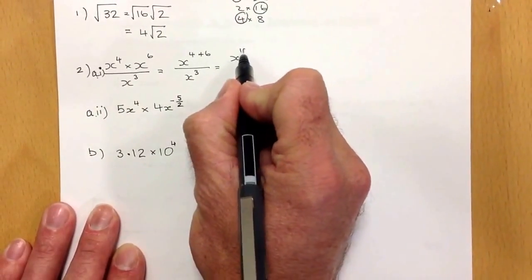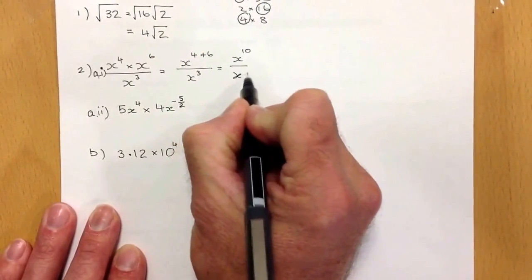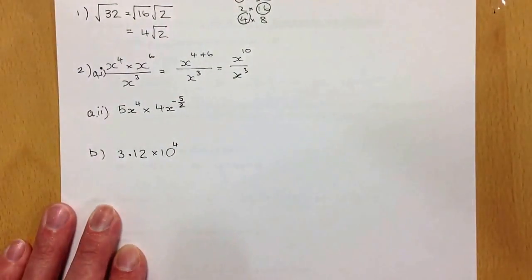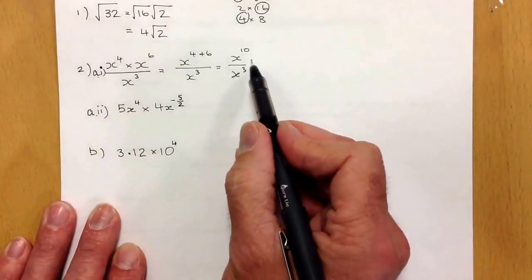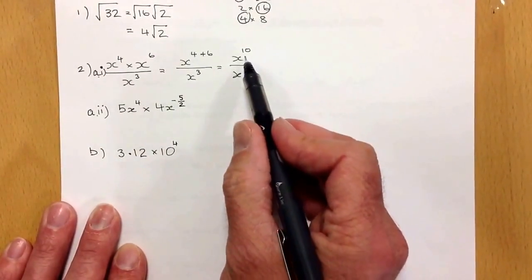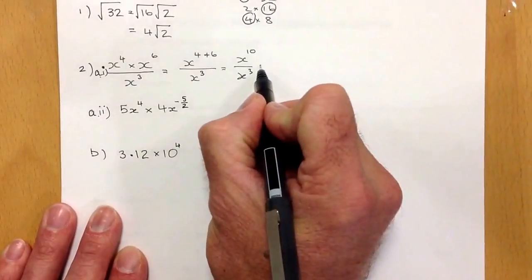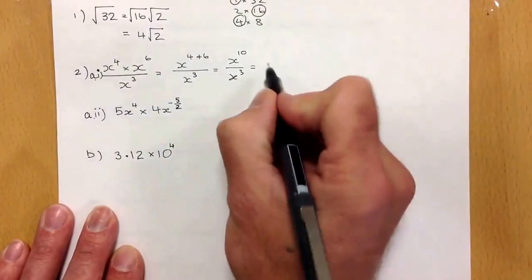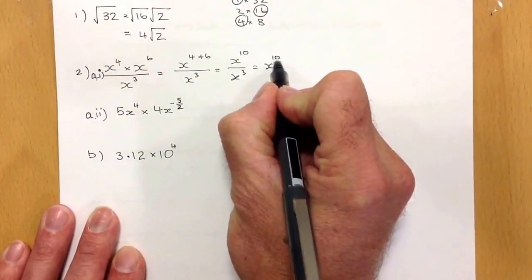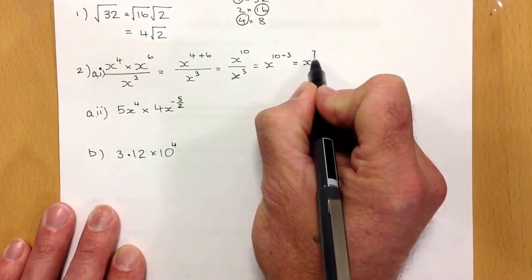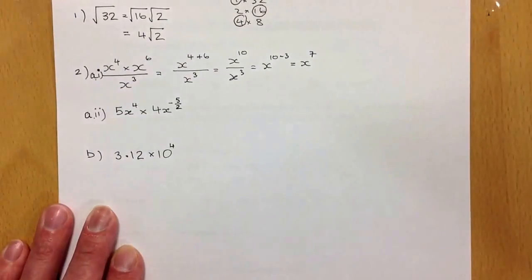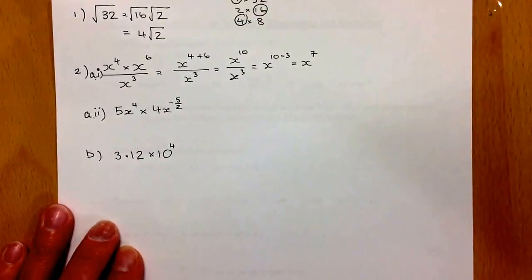To simplify the top, just add them together, and that gives me x to the power of 10 divided by x to the power of 3. Now, the next law I'm going to be interested in is division. When I'm dividing with indices, I'm going to be subtracting. So my next line will be x to the power of 10 take away 3, and my final answer should give me x to the power of 7. That's my final answer there.